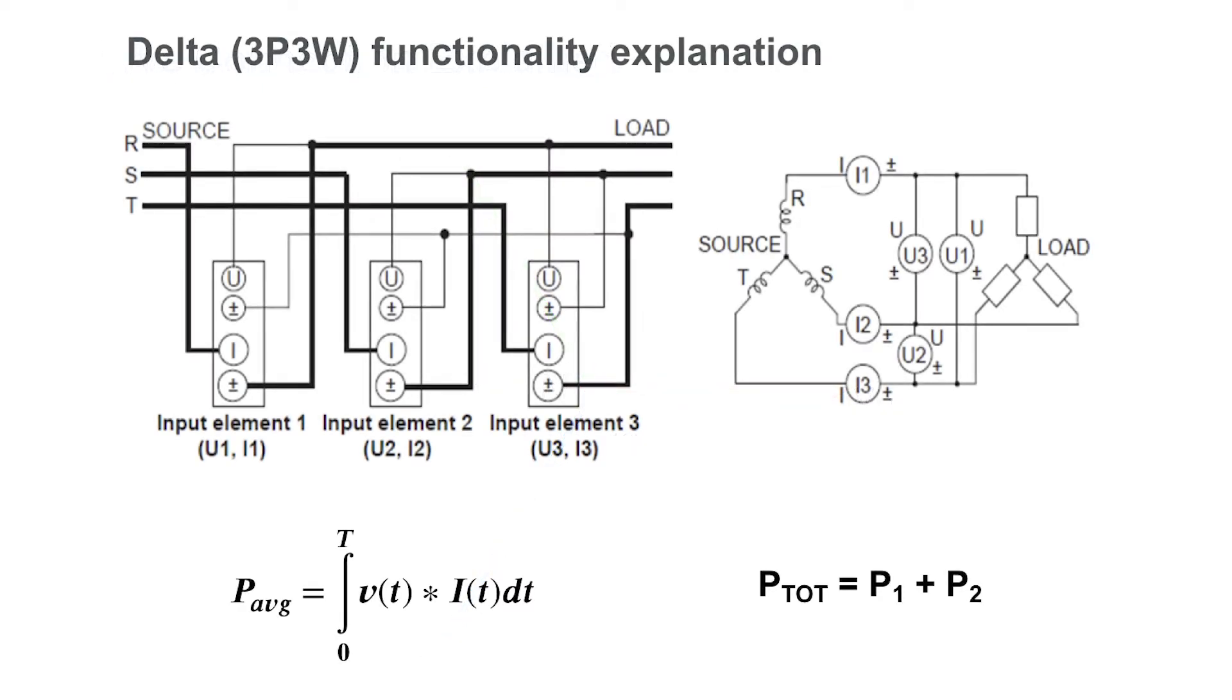However, more often than not in motor testing, we do not have a neutral available to reference. In these cases, we have to wire our voltage in a delta connection that will reference the voltage of each phase to another phase. As you can see when wired in this method, we get line-to-line voltage rather than line-to-neutral voltage.